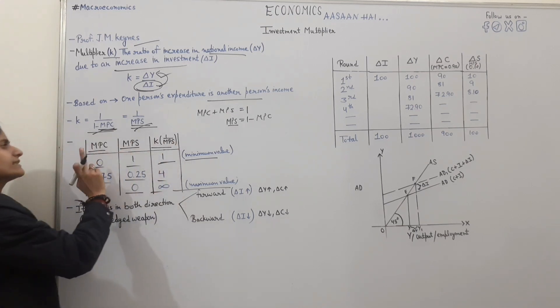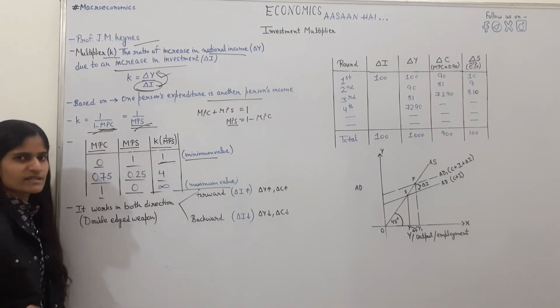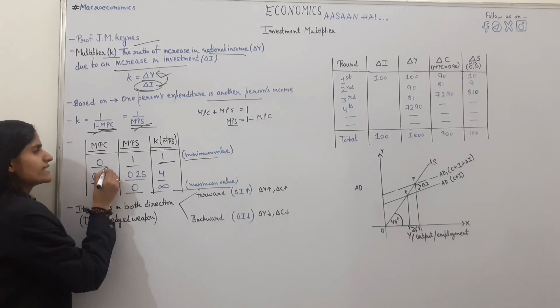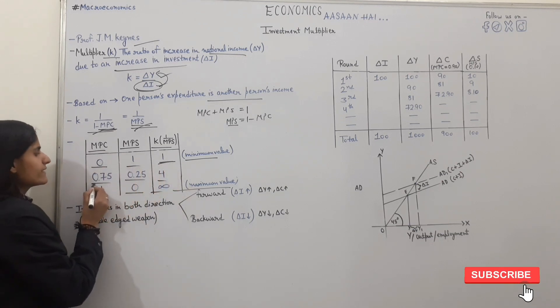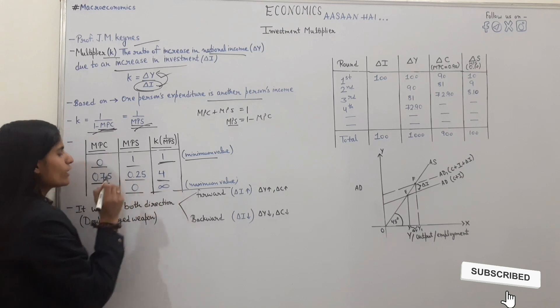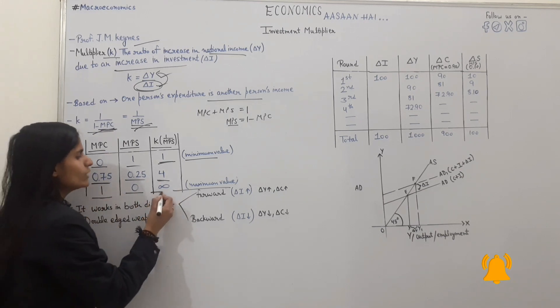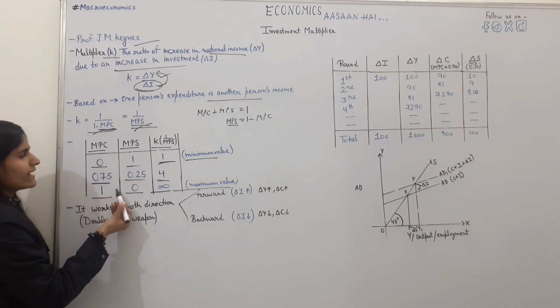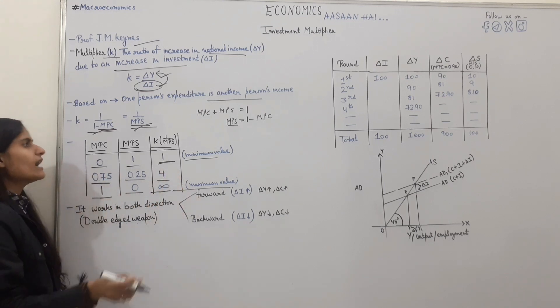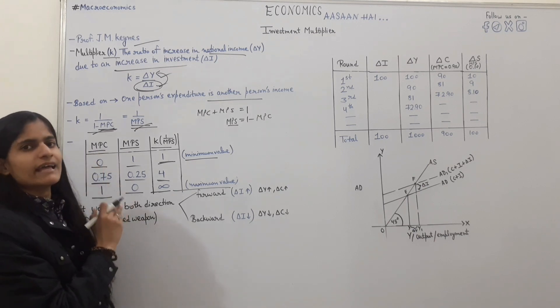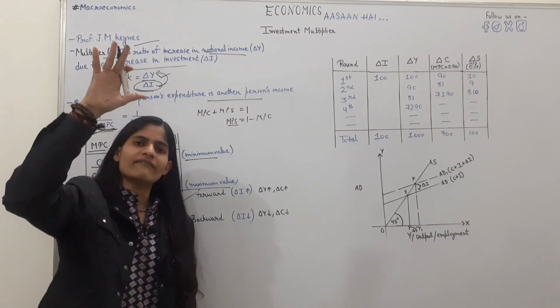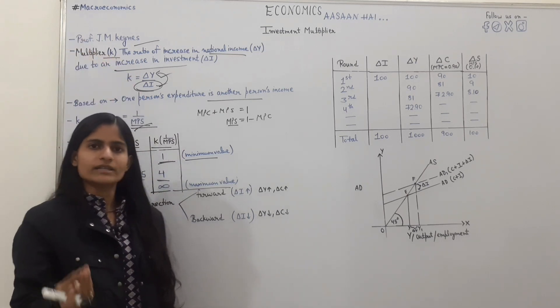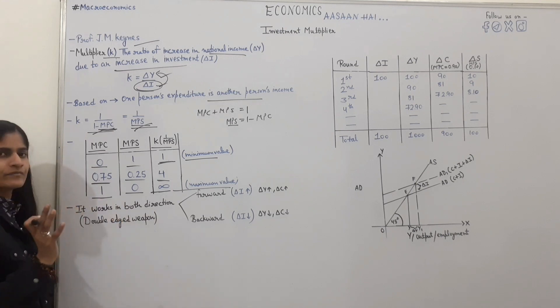K value depends on MPC and MPS. MPC and K are relational. K value is 4 when MPC value is 0.75. MPC value is 1, K value is infinite. If MPC value is 0, then K value is 1. There is a direct relationship between MPC and K. If MPC is important, then K will be high. If MPC is less, then K will be less.